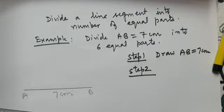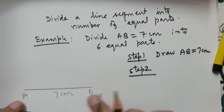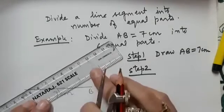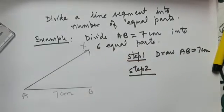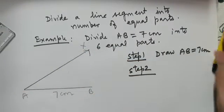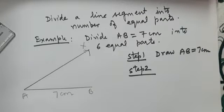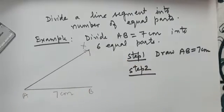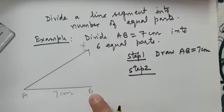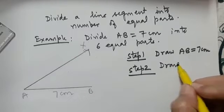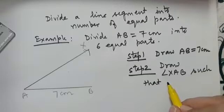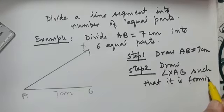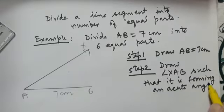Let us see what is step 2. Step 2 is at point A. You see that this is a line segment. It has two endpoints A and B. So at point A with the help of a ruler we will be drawing a ray and let us name this ray as AX such that angle XAB is an acute angle. What is an acute angle? Yes, its measurement is less than 90 degrees. So you can draw this ray the way you feel like but remember angle XAB should be an acute angle. So step 2 is draw angle XAB such that it is forming an acute angle.